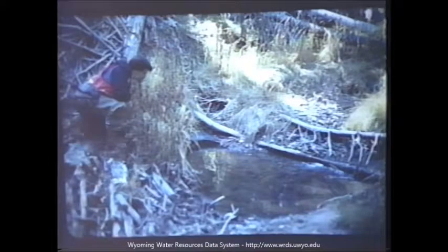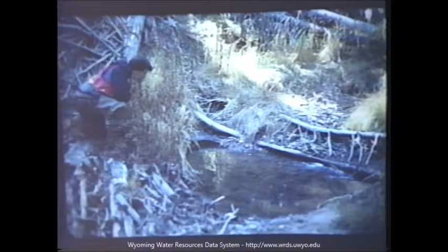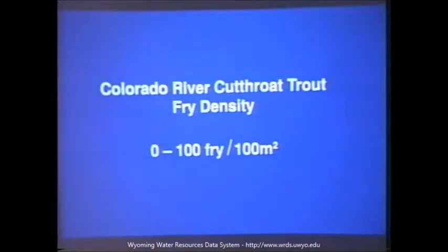Because we wanted to see how fry density or abundance was related to these habitat variables, we quantified fry abundance. We did this using stream-side visual counts, where an individual walks or basically crawls along the bank and counts the number of fry seen at each of the sites. Fry density was also quite variable at those sites, ranging from 0 to 100 fry per 100 meters squared.